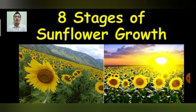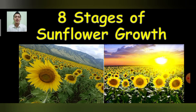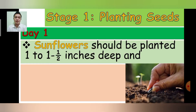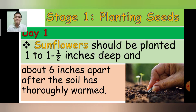Let's talk about the 8 stages of sunflower growth. Stage 1: Planting Seeds — Day 1 of planting sunflower. Sunflowers should be planted 1 to 1½ inches deep and about 6 inches apart after the soil has thoroughly warmed. This is the process of seed planting that you have to remember if you plan to grow a sunflower.